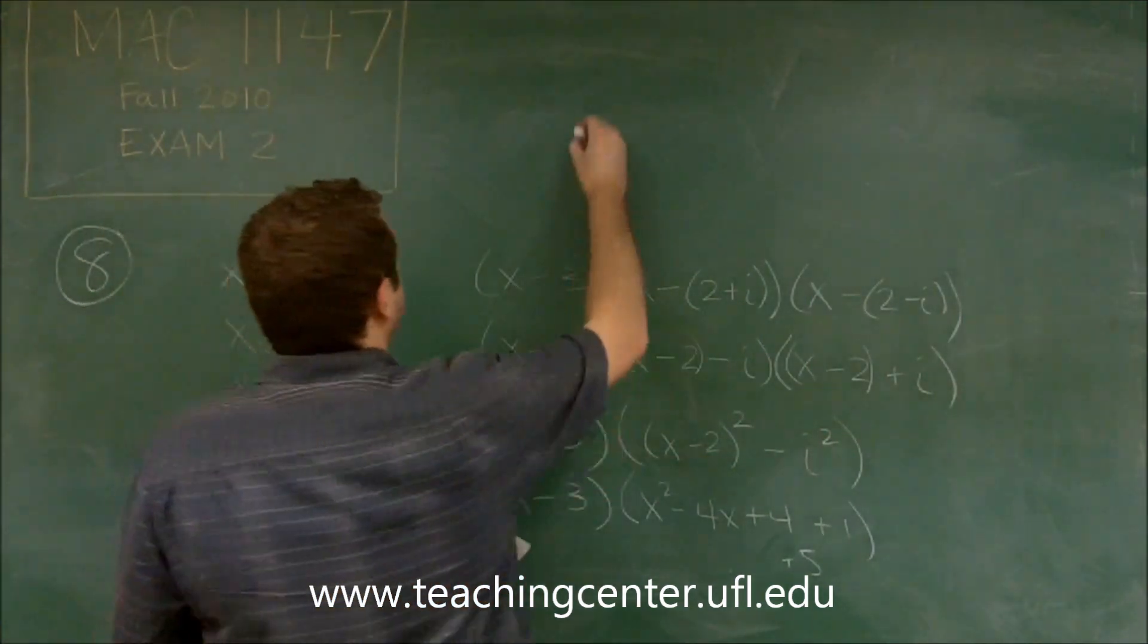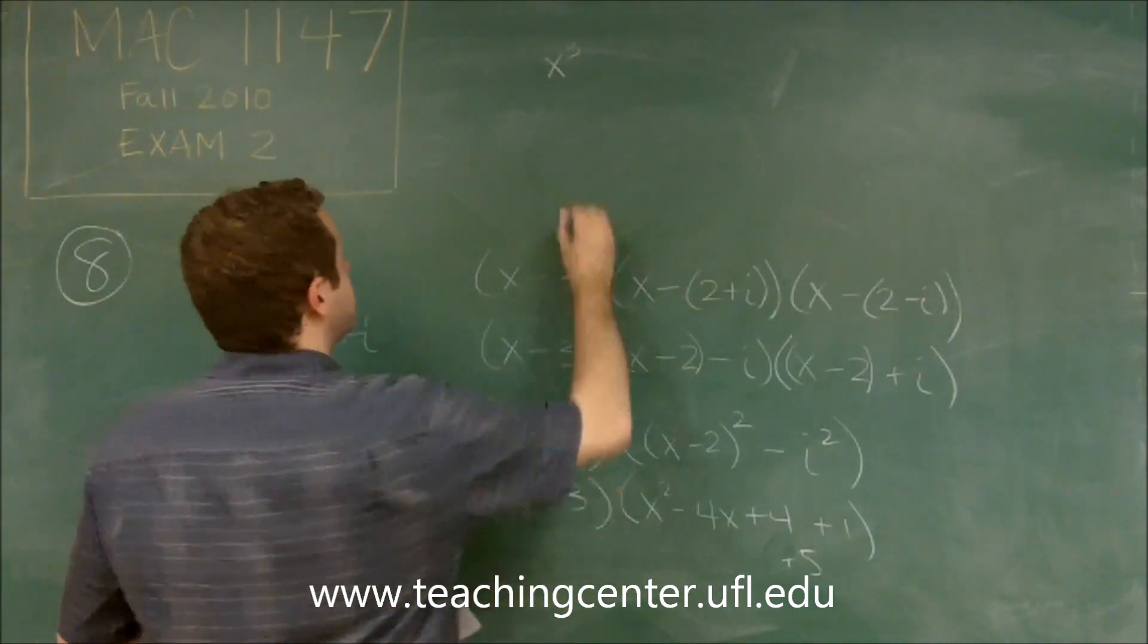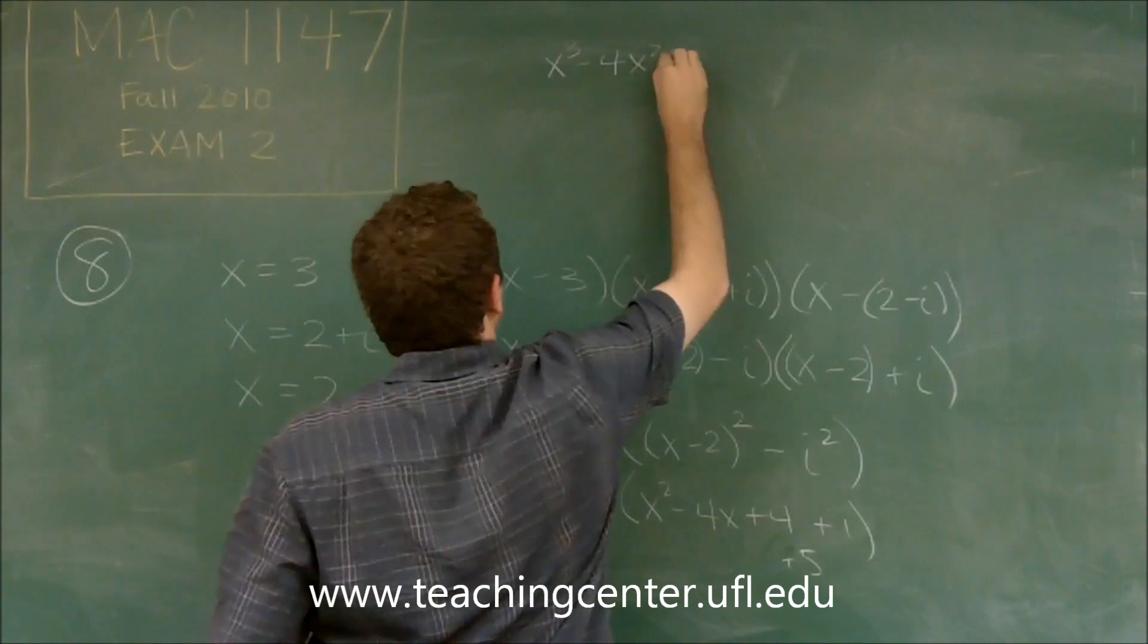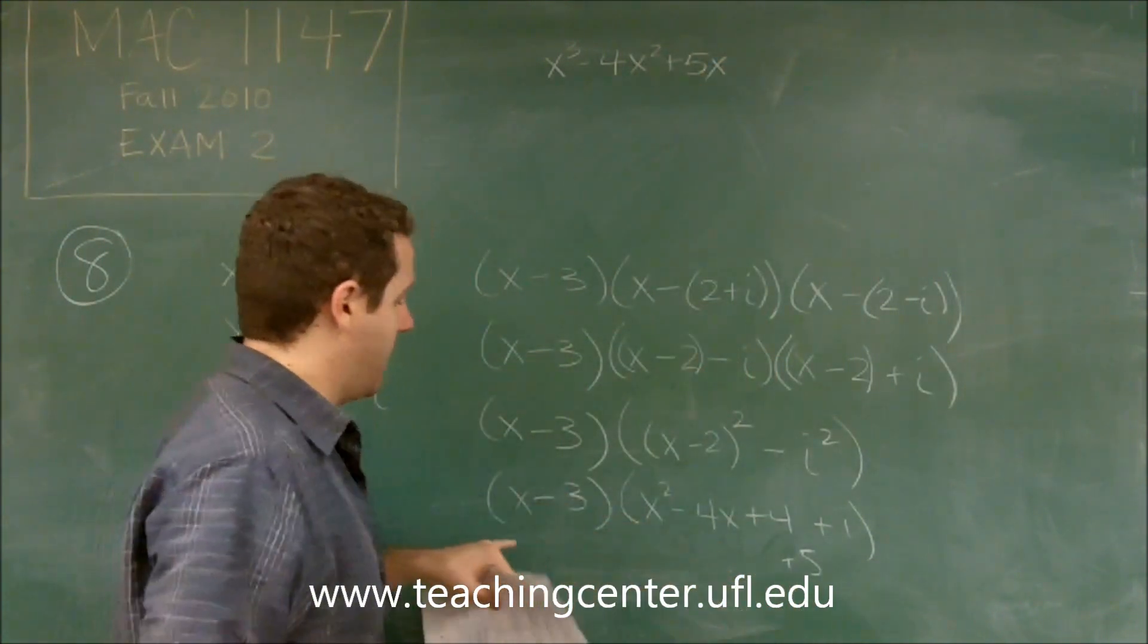So we'll multiply everything by x first. You get x cubed minus four x times x is minus four x squared and plus five x. So that was multiplying all three terms by x.